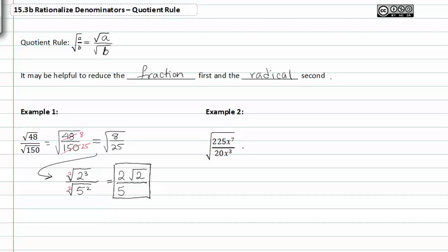In example two, we do a similar process. If I reduce the common factor of five out of the numerator and the denominator, two-twenty-five is divisible by five, and we get forty-five. Twenty is divisible by five, and we get four.